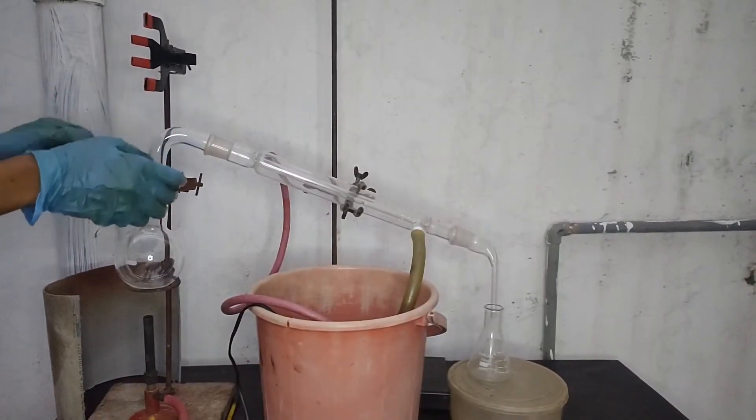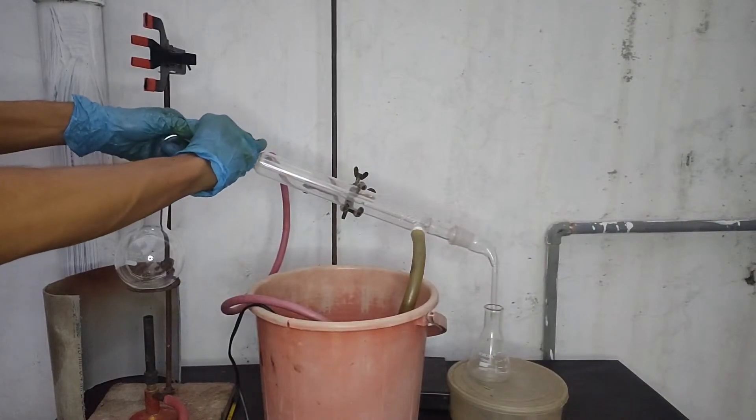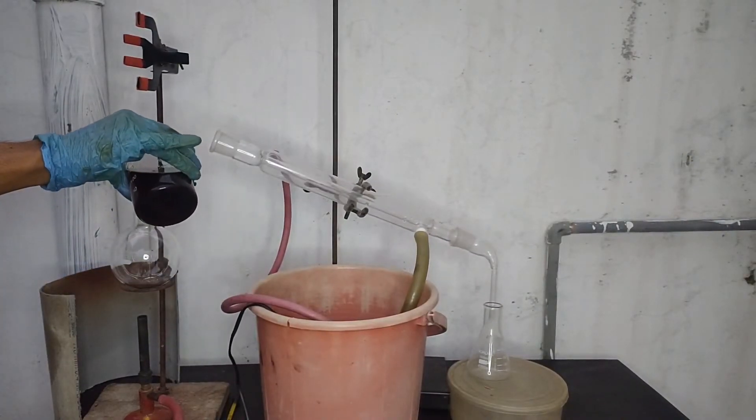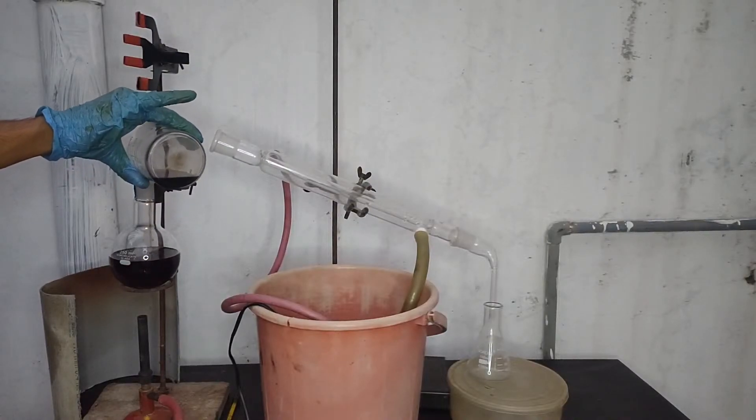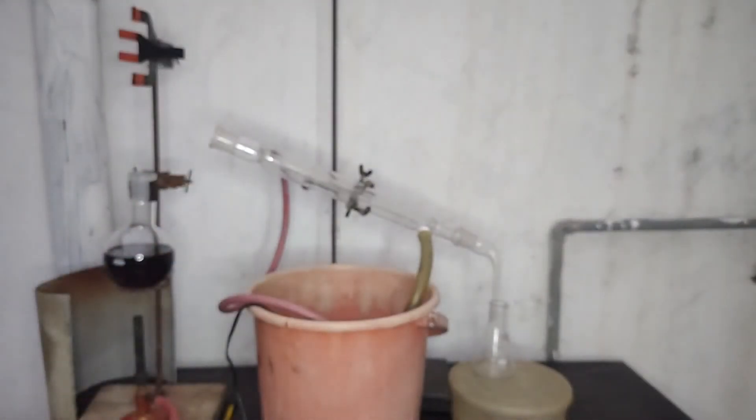A distillation setup was set up and 200 ml of drain cleaner was added to a 250 ml round bottom flask. To the boiling flask I added some porcelain chips which will reduce bumping and favor smooth boiling.